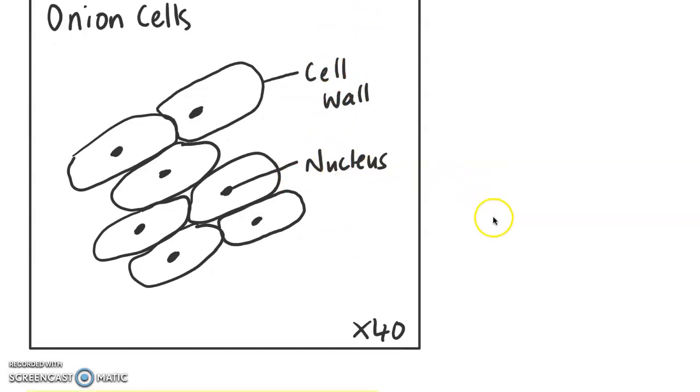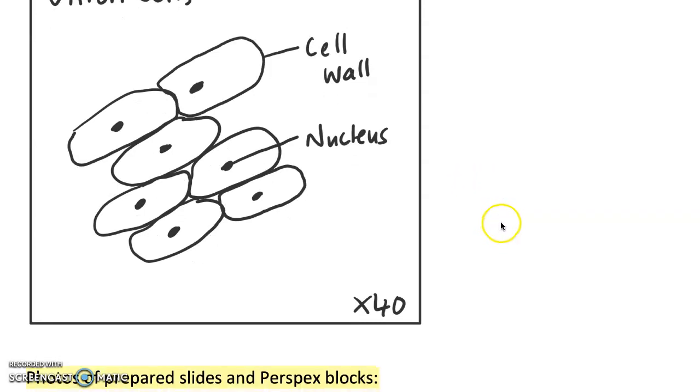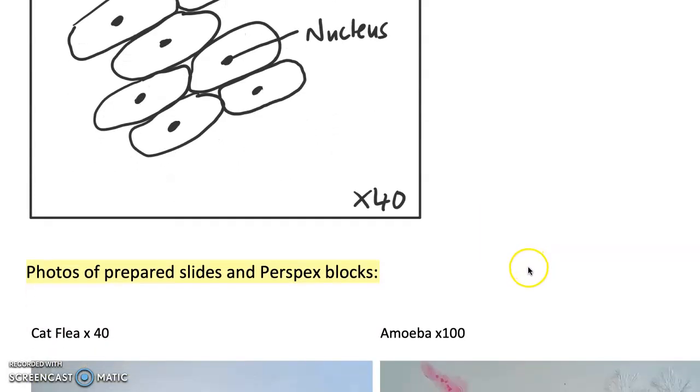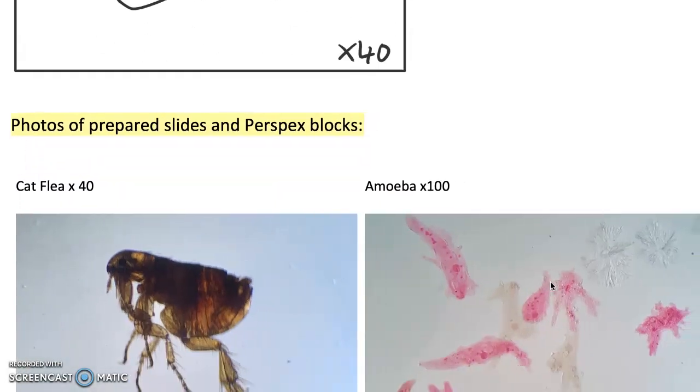As I said earlier, I've got some photos here. Obviously in the lab you can look at these things under the microscope, but you can also use these photos. The top four are prepared slide photos, so I've included the magnification. Then the pictures below are of the Perspex blocks that are holding organisms that we've got. When you're in the classroom, you can look at those under the stereo microscope.